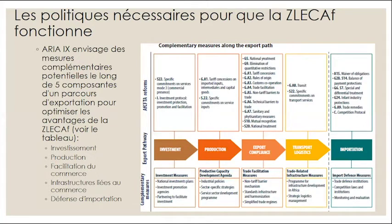Sous chaque composante, le rapport énumère les mesures complémentaires nécessaires à la mise en œuvre effective de l'accord ZLECAF. Par exemple, dans le volet investissement, ces mesures comprennent l'élaboration de plans d'investissement nationaux, la création d'agences de promotion de l'investissement là où elles font défaut, et la création de partenariats avec les pays membres pour faciliter l'investissement. Ces mesures seront probablement abordées dans un futur protocole d'investissement. Nous vous encourageons à parcourir attentivement ce schéma et à prendre note des mesures complémentaires recommandées dans les autres domaines du parcours d'exportation.